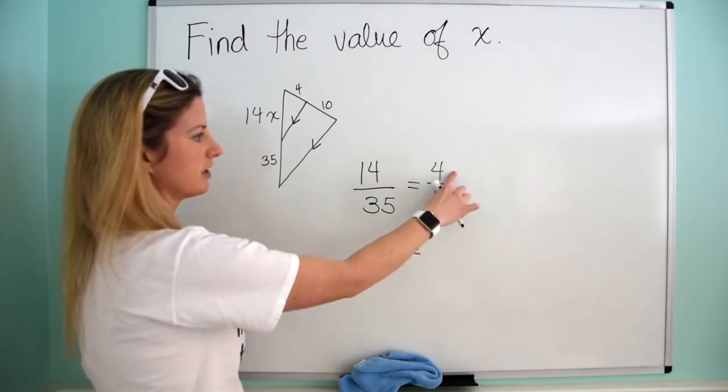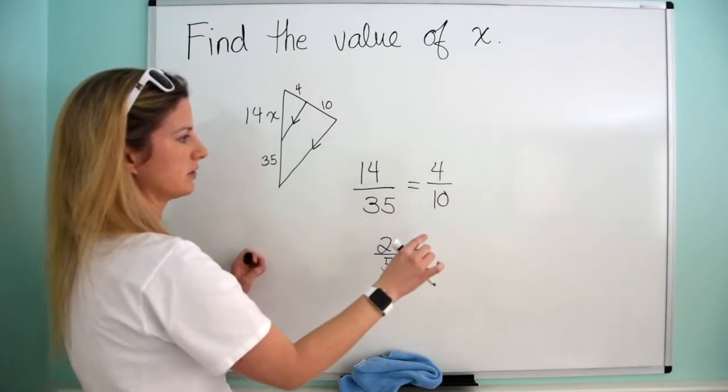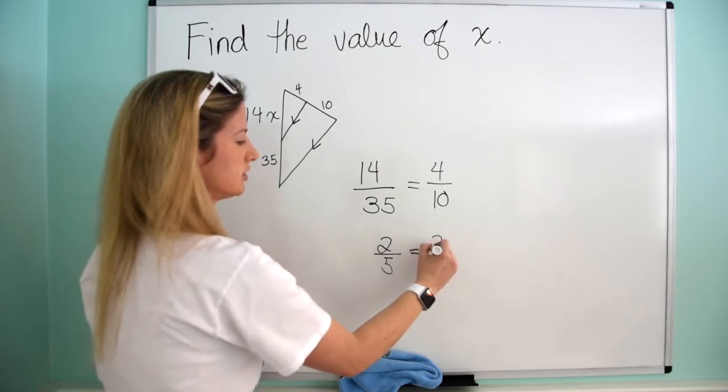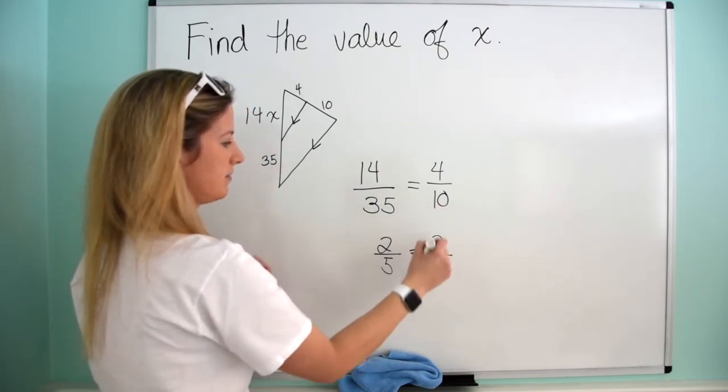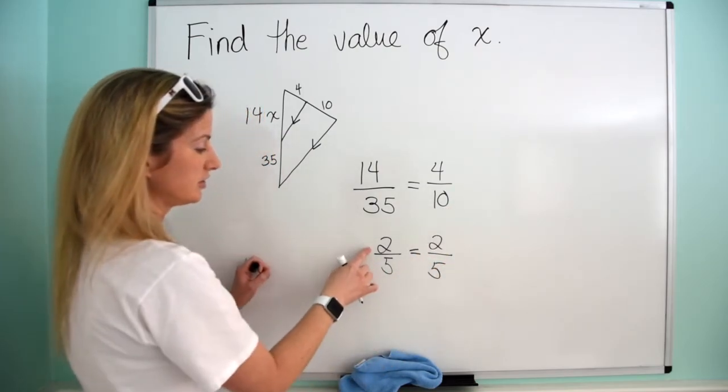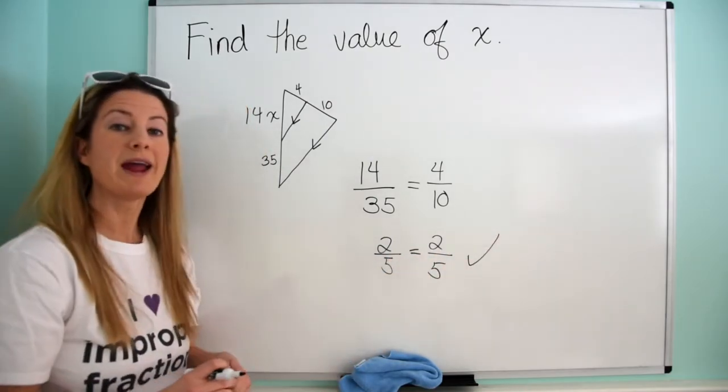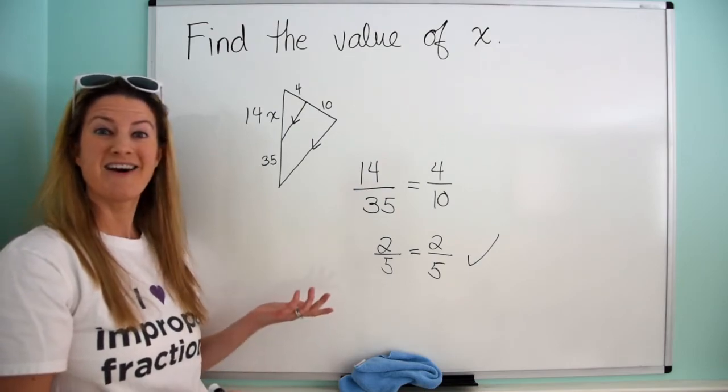And then we come over here, greatest common divisor is going to be 2. So 4 divided by 2 is 2, and 10 divided by 2 is 5. And look at that, 2 over 5 equals 2 over 5, 2 fifths equals 2 fifths. We know we are right, we know we have the right answer. So there you go.